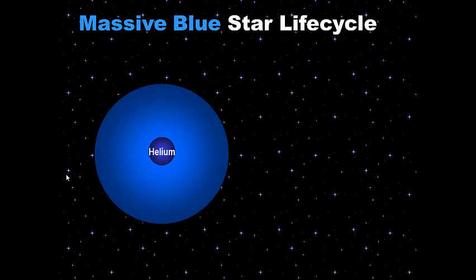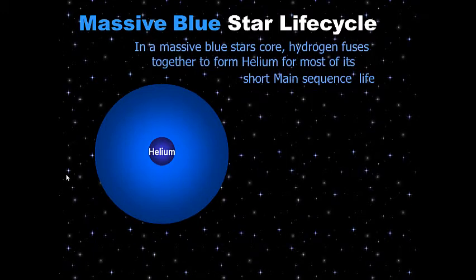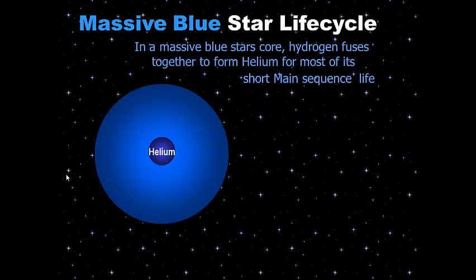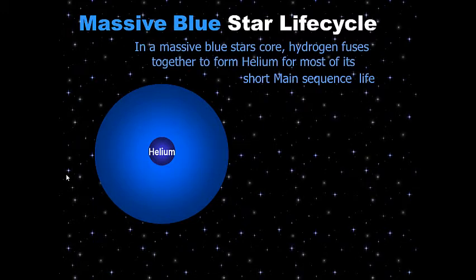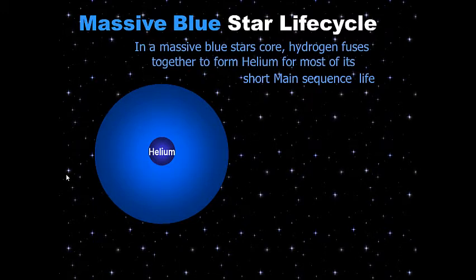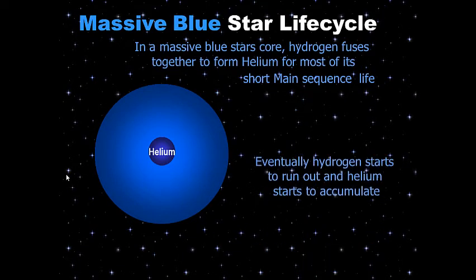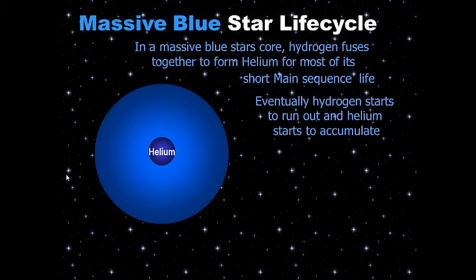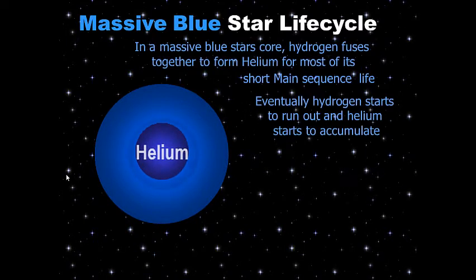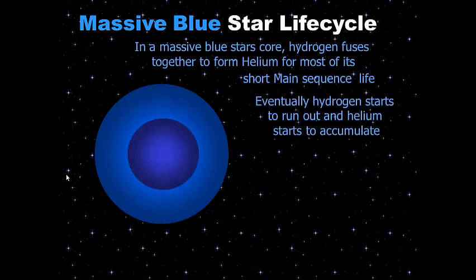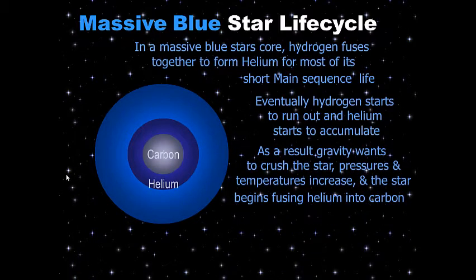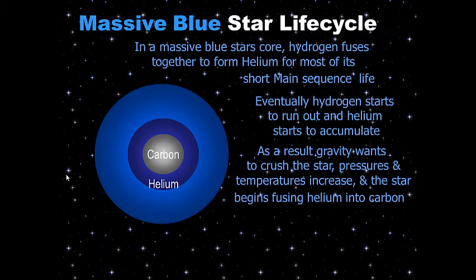Now here is the massive blue star life cycle. In a massive blue star's core, hydrogen fuses together to form helium for most of its main sequence life — it's smashing hydrogen atoms to make helium, producing energy through fusion. Eventually hydrogen starts to run out and helium accumulates in the core. As a result, gravity wants to crush the star, temperatures increase, and the star begins fusing helium into carbon.